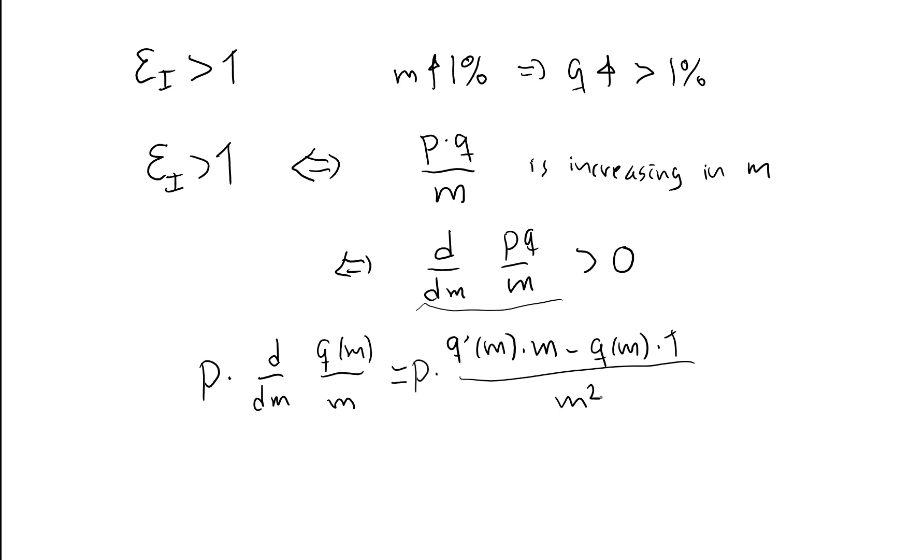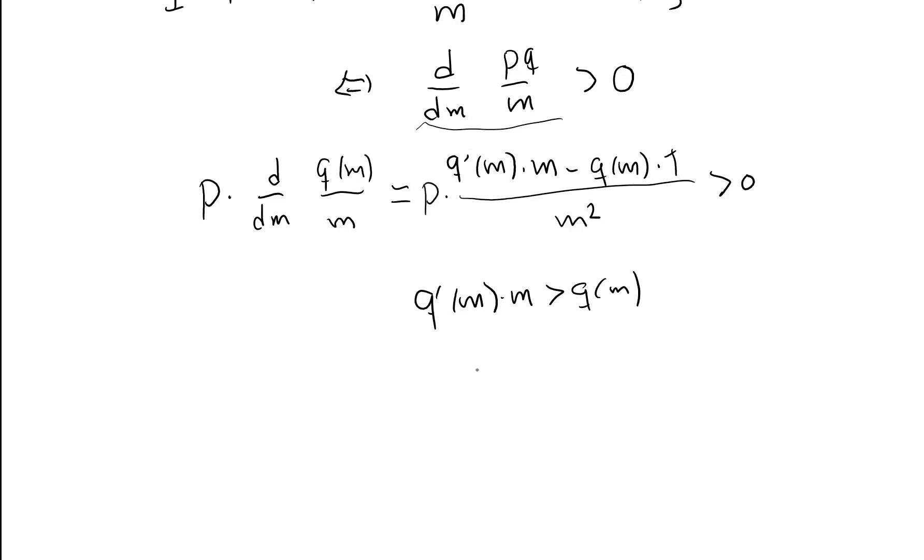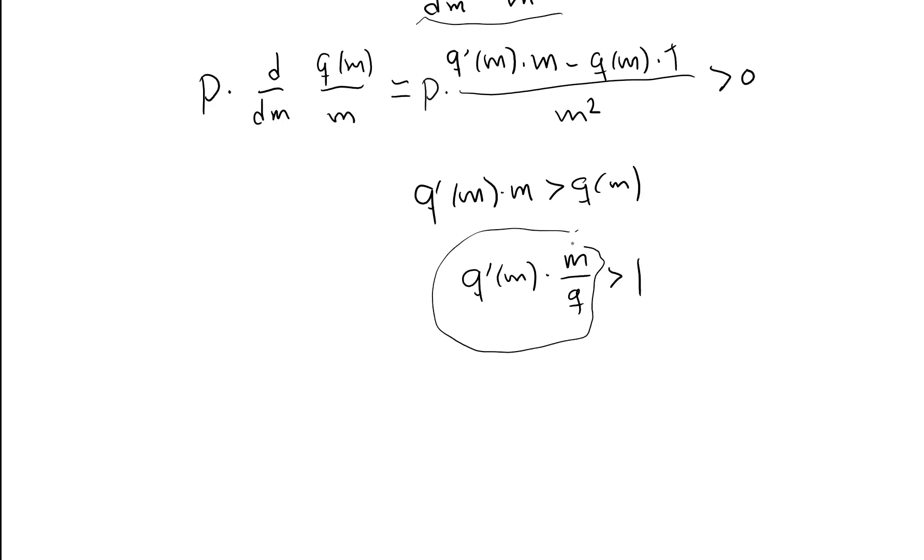So when is this derivative strictly positive? That is, when is the proportion spent on this good increasing in m? This derivative is positive if the numerator is positive, that is, if q prime m times m is greater than q of m. Divide both sides by q of m, then we have q prime m times m over q is greater than 1. Hopefully you recognize this expression as precisely the income elasticity of demand, epsilon i greater than 1. The income elasticity of demand is greater than 1 if and only if this derivative is strictly positive, that is, if and only if the proportion spent on the good is increasing in m.